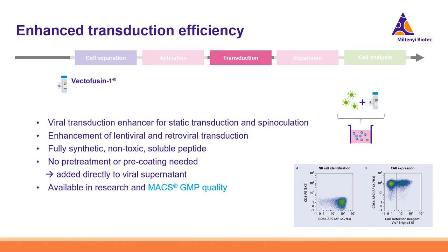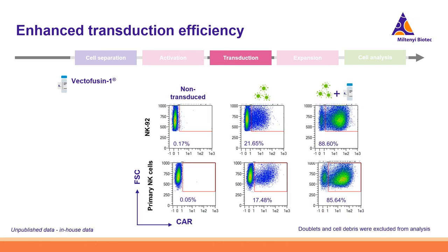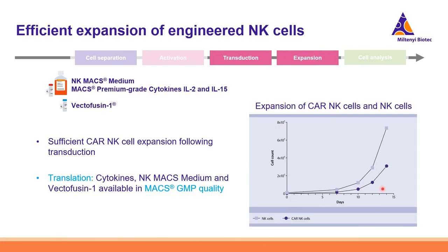Here is data showing how Vectofusin-1 impacts transduction efficiency: NK92 cells in the upper row and primary NK cells in the lower row were either non-transduced, transduced with virus only, or transduced with virus in combination with Vectofusin-1. The usage of Vectofusin-1 highly increases transduction efficiency. After transduction, CAR-NK cells also expand nicely with NK MACS Medium in combination with IL-2 and IL-15.